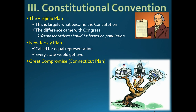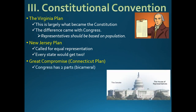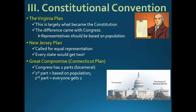Congress will be bicameral — two houses: the Senate and the House of Representatives, two chambers. In the Senate, all states are equal; every state has two senators. In the House, the big states have the power. So really the Senate is like the New Jersey Plan and the House is like the Virginia Plan. Connecticut was a medium-sized state that made this compromise, and that's how we get Congress.